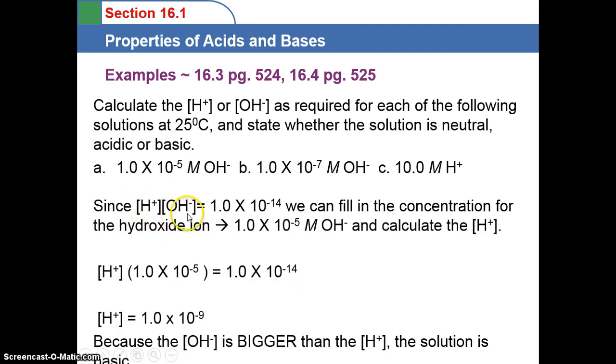Since the H+ times the OH- concentration is 1 times 10 to the negative 14th, we can fill in the concentration for the hydroxide ion, which is the 1 times 10 to the negative 5th molar that was given, and calculate the H+ ion concentration.